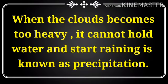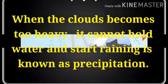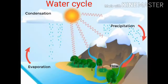Now let us see the water cycle. The first step we have seen is evaporation. Then the second step is condensation. And the third step is precipitation.